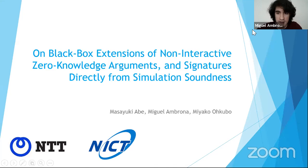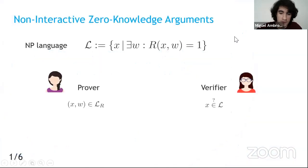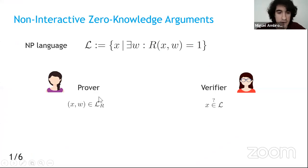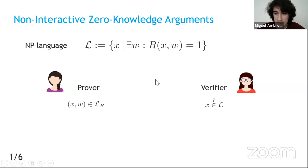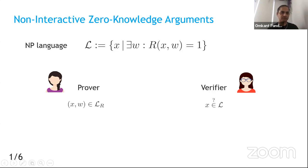Next talk: "On Black-Box Extensions of Non-Interactive Zero-Knowledge Arguments and Signatures Directly from Simulation Soundness," joint work with Masayuki Abe and Miyako Ohkubo from NTT. Speaker is Miguel Ambrona.